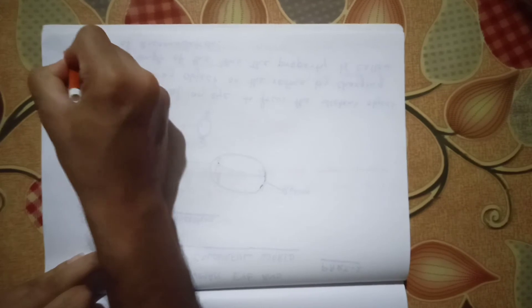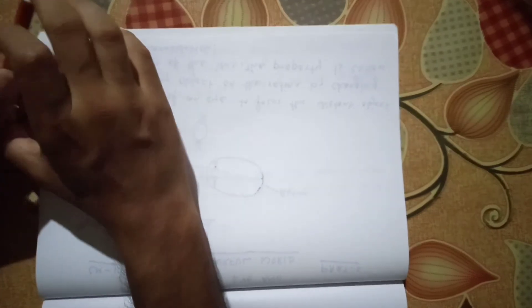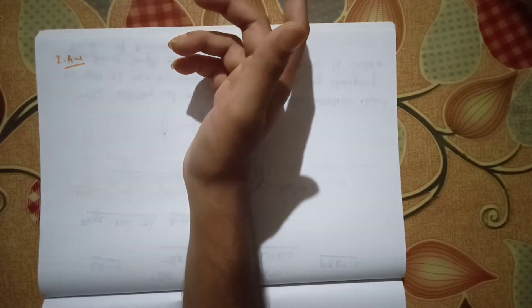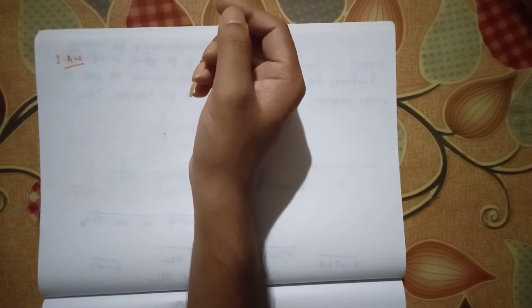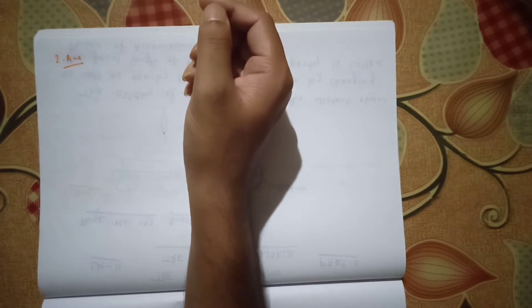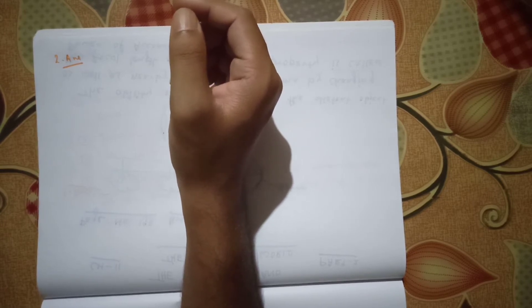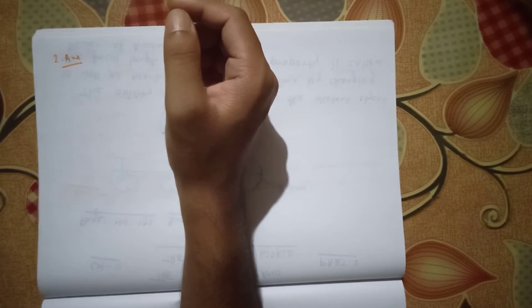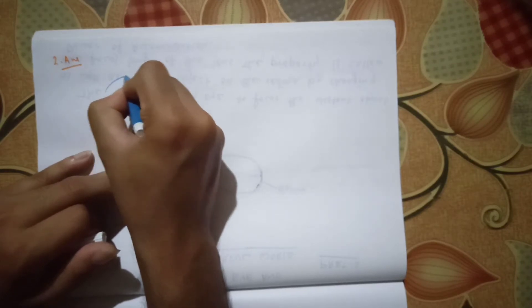Now the second question. It is said that a person with myopia eye cannot see objects beyond 1.2 meters distinctly. What should be the type of corrective lens used to restore proper vision? As we know, the person having myopia should have concave lens. Now what should be its power?